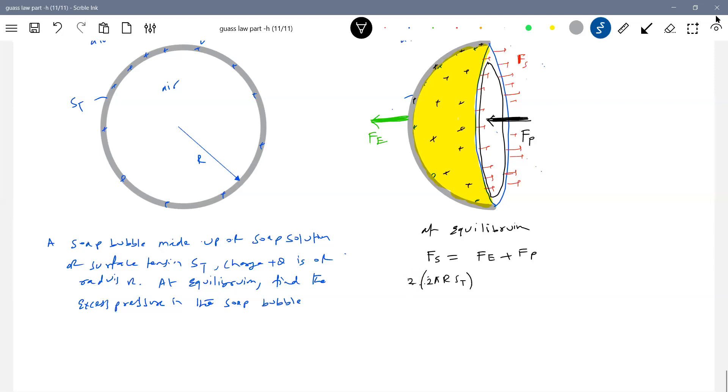This to that one equal to, what is FE? Do we know this? Q square by 32 pi epsilon not R square. What is FP? Delta P into effective area pi R square.